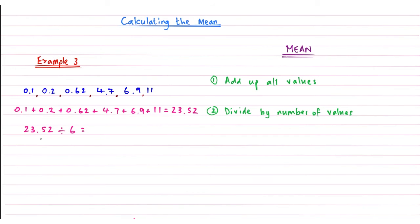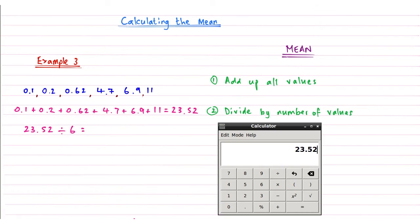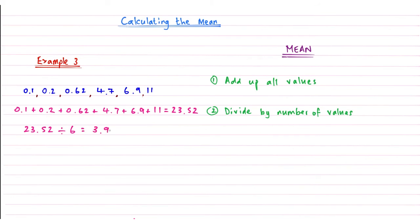Again, we can use a written method. So we can use short division. If you've watched short division level 7 on my playlist, this will teach you how to divide a decimal by a single digit. But because we've got the calculator already open, why don't we just use that? So 23.52, and now we need to divide this one by 6.